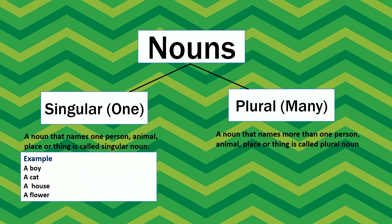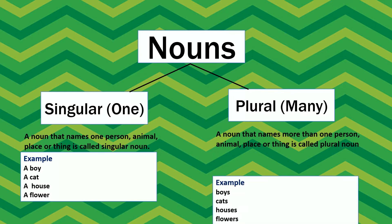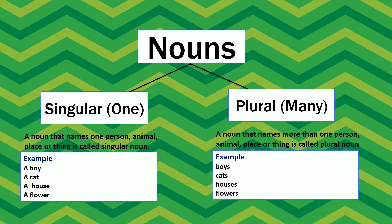Examples of singular nouns are a boy, a cat, a house, a flower. Examples of plural nouns are boys, cats, houses, flowers.